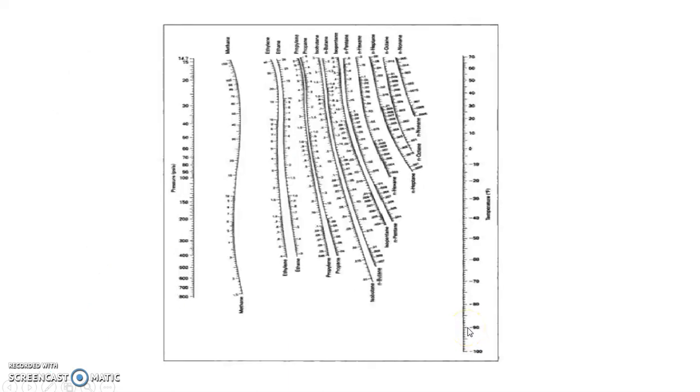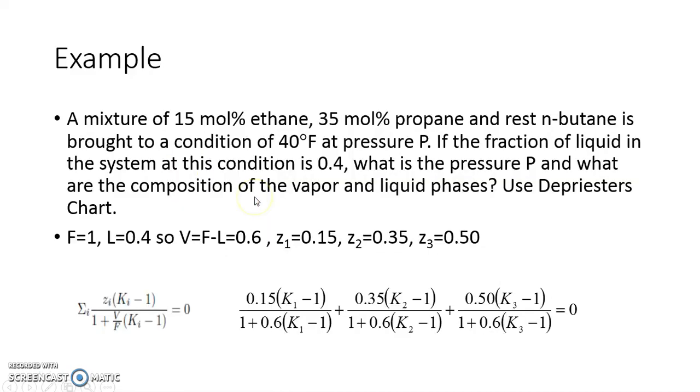What we will do is we have got DePriester chart, temperature is 40 Fahrenheit, and we draw a line and make pressure and find out K1, K2, K3. Substitute those K1, K2, K3 here, and if it is equal to 0 you got your answer. If not, make another iteration.